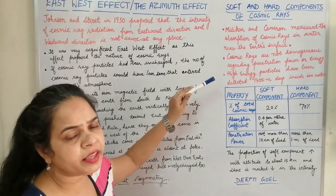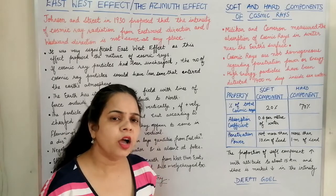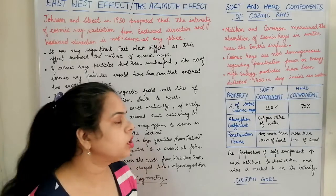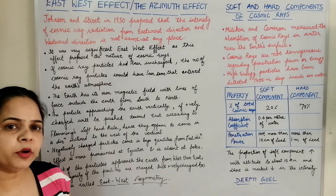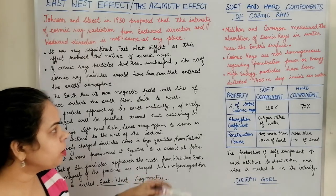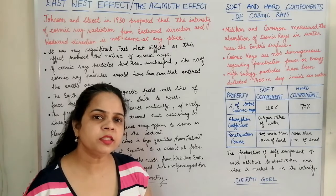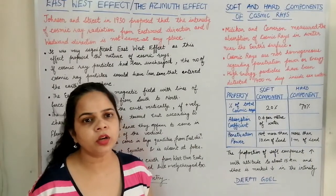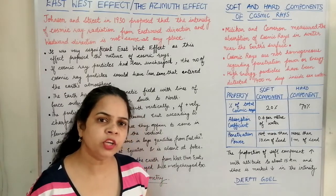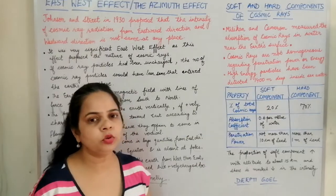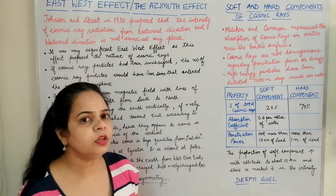High-energy particles of cosmic rays have been detected at a depth of 1,400 meters inside seawater, showing that cosmic rays have a high penetration power. The components are divided into two categories: soft and hard. It has been found that 20% to 30% of total cosmic rays are the soft component, whereas the hard component constitutes 70% of the total cosmic rays — making the hard component the major one.